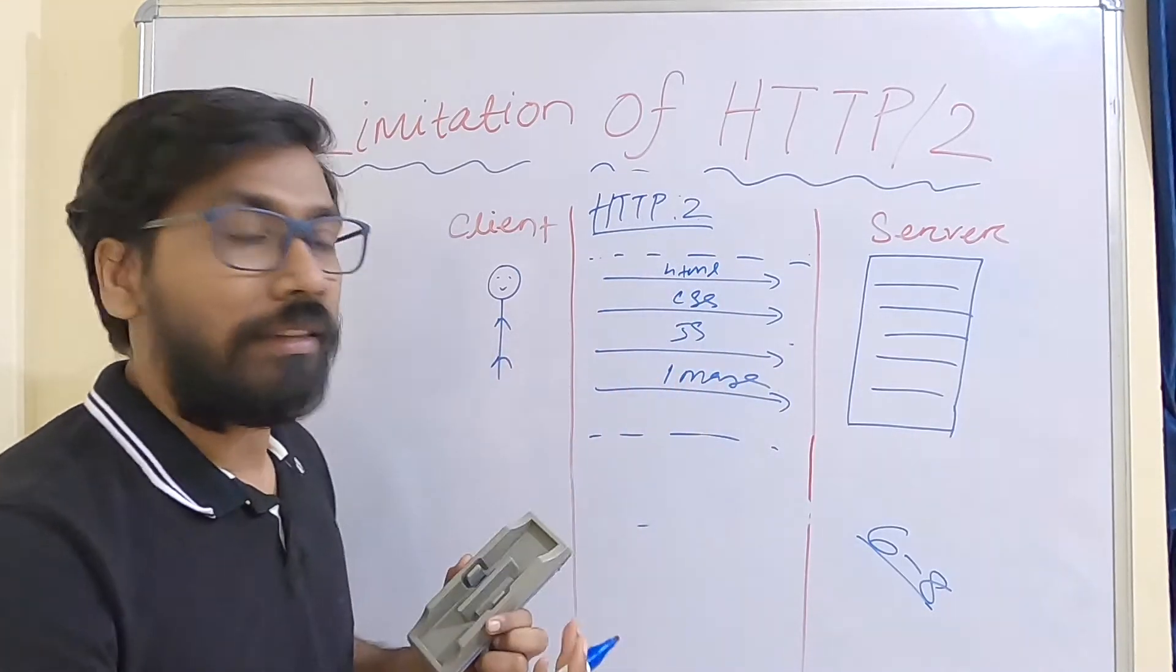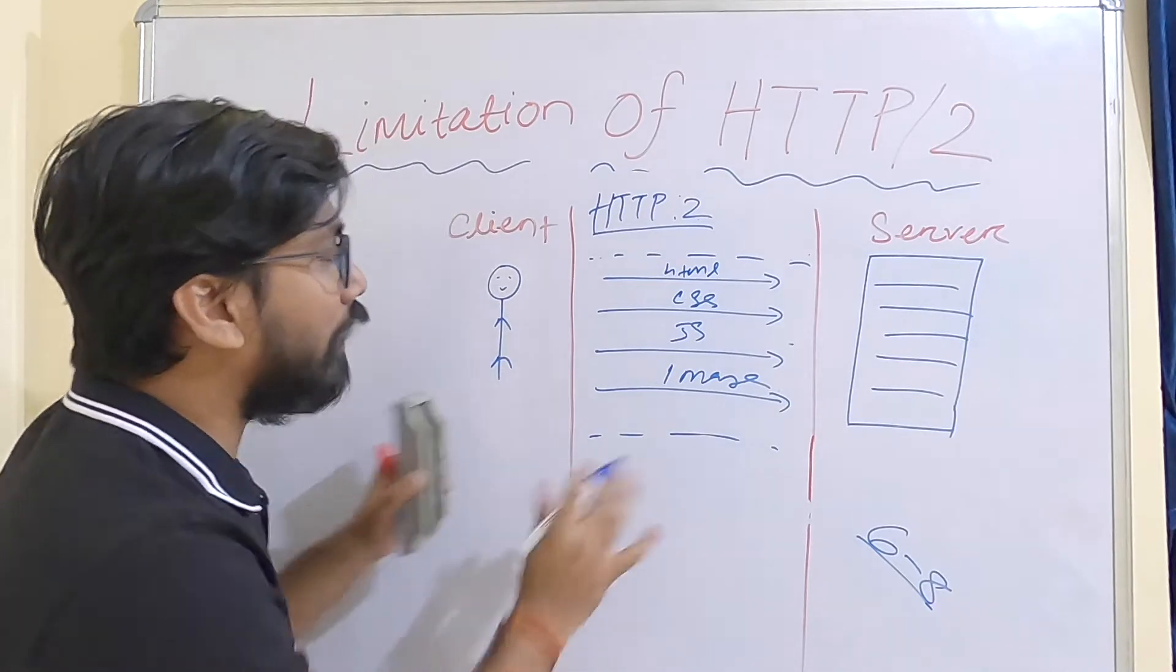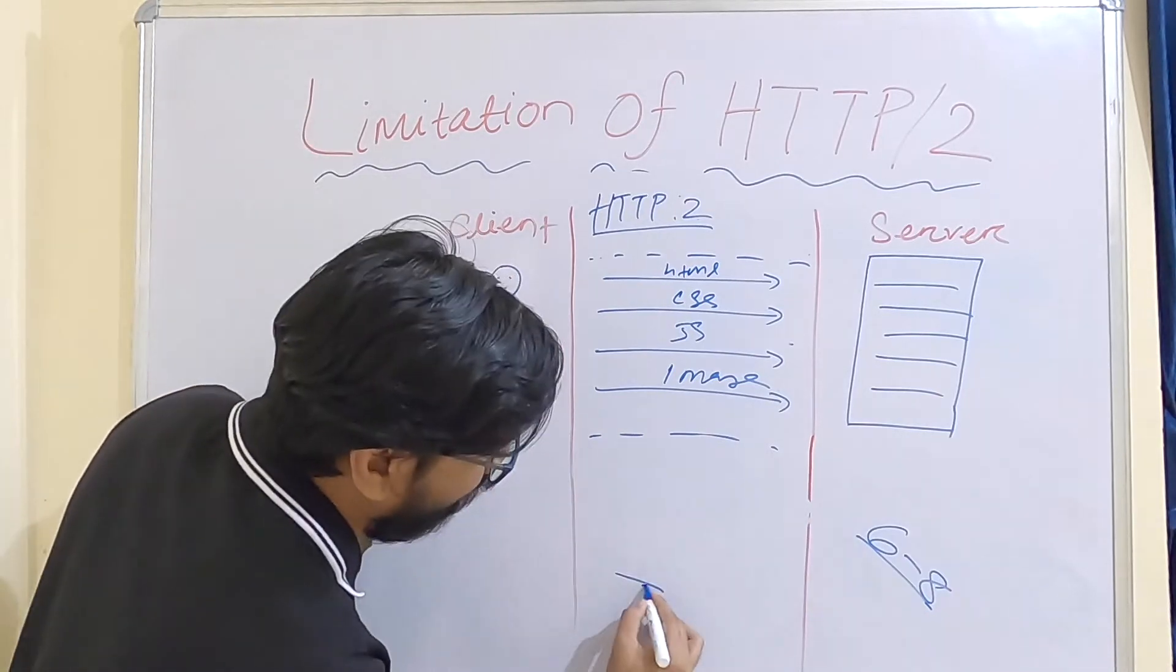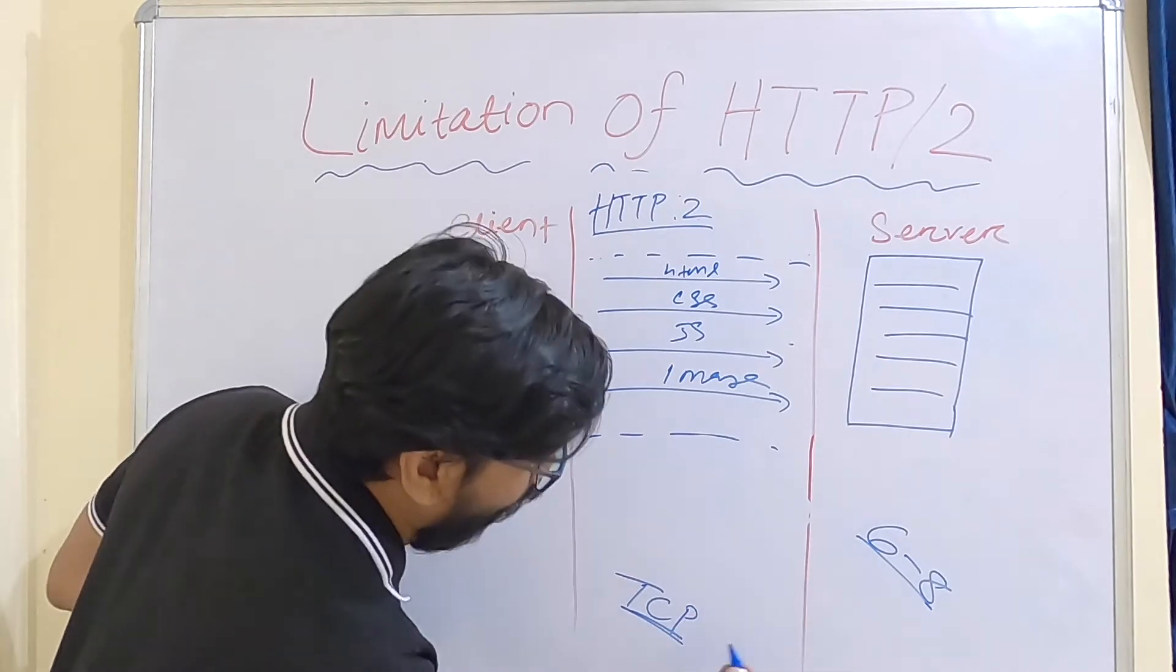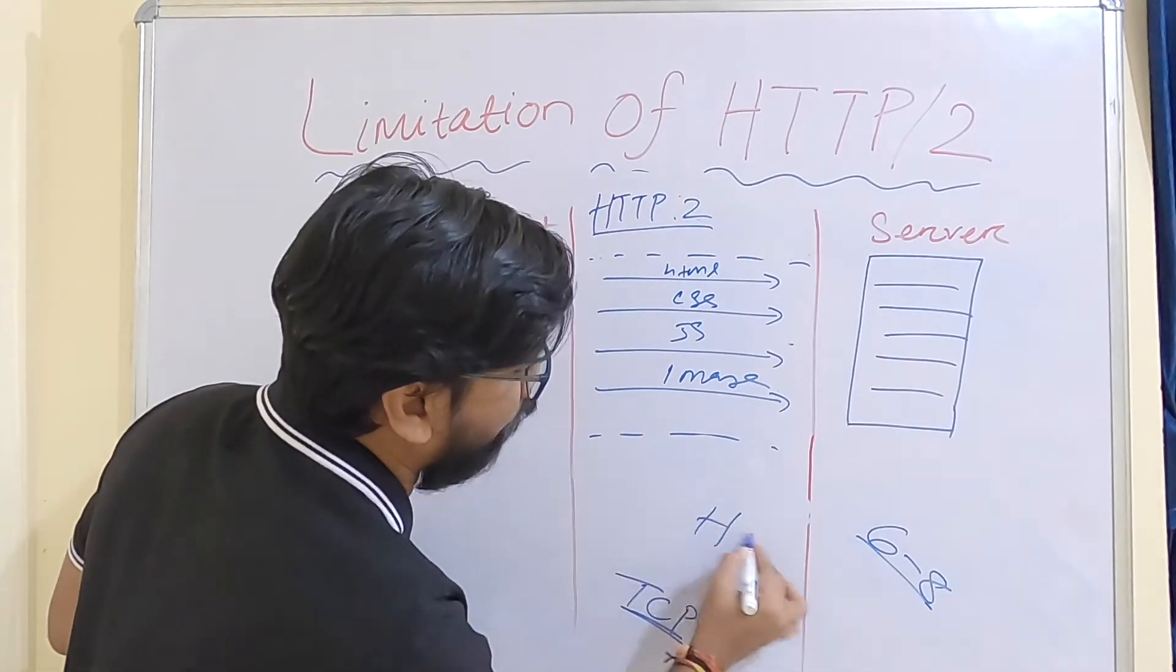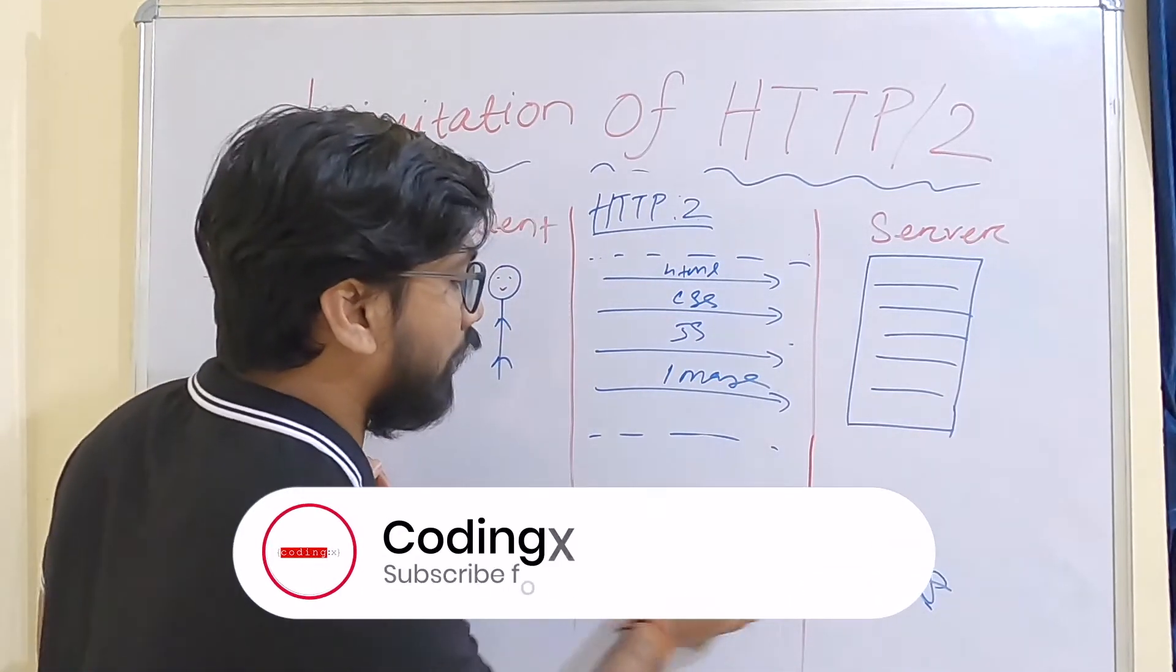That means your website loads very fast - this is called multiplexing. But the problem is, this resolves HTTP level head of line blocking, but the problem in TCP level - another problem arises: TCP head of line blocking.